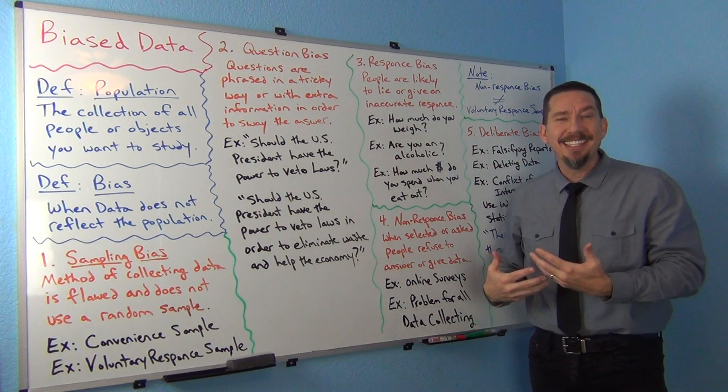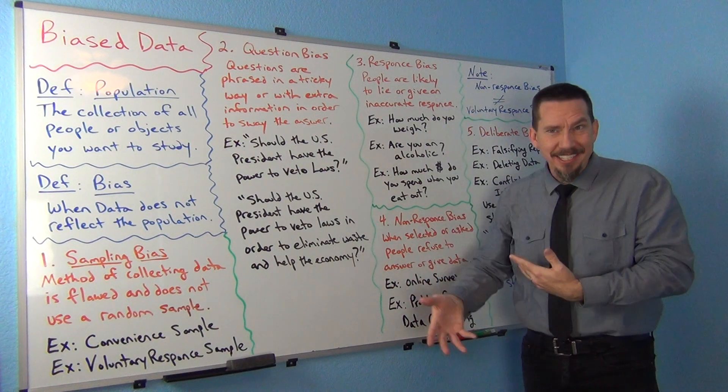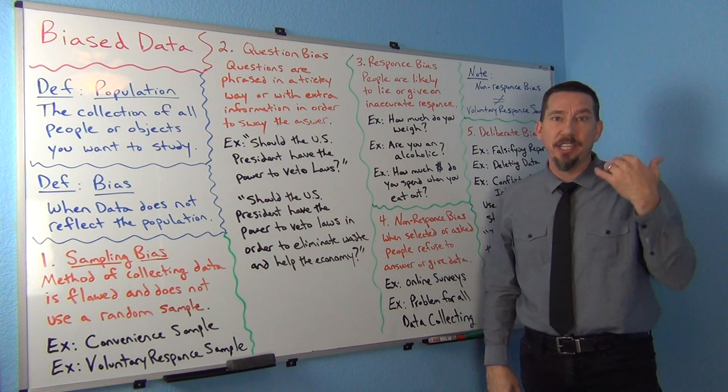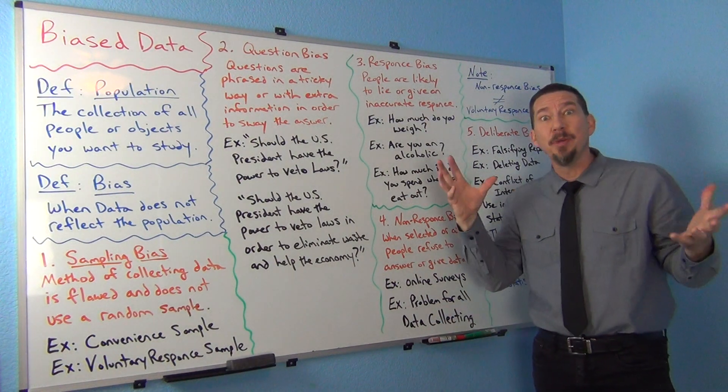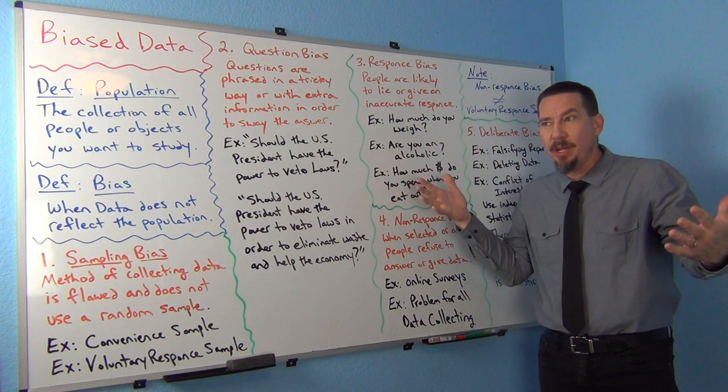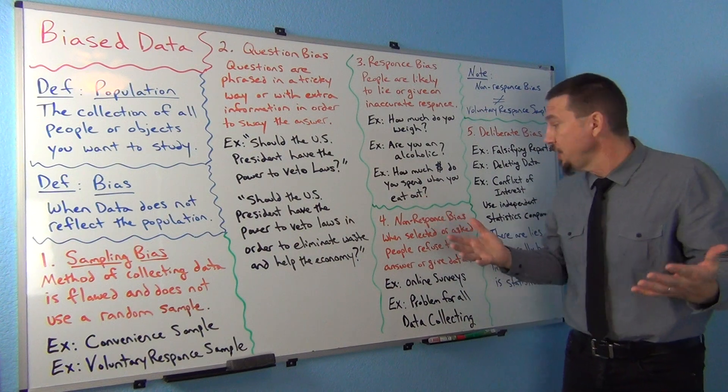Then you have the computer randomly select another person and they don't want to give you data. And the computer randomly selects another person and they don't want to, maybe by the fifth or sixth person, we finally get someone that'll talk to us. That's becoming a huge problem now. So like one in every five, one in every six that we actually call, we can get data from. So this is becoming an issue.